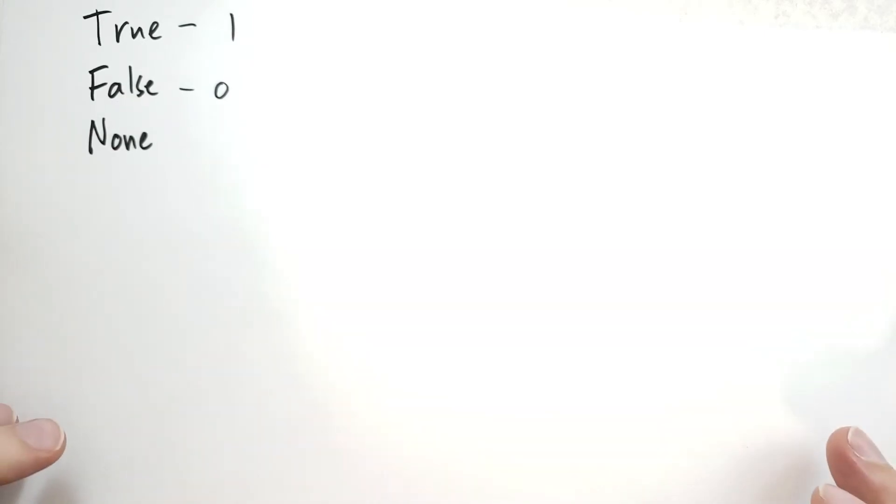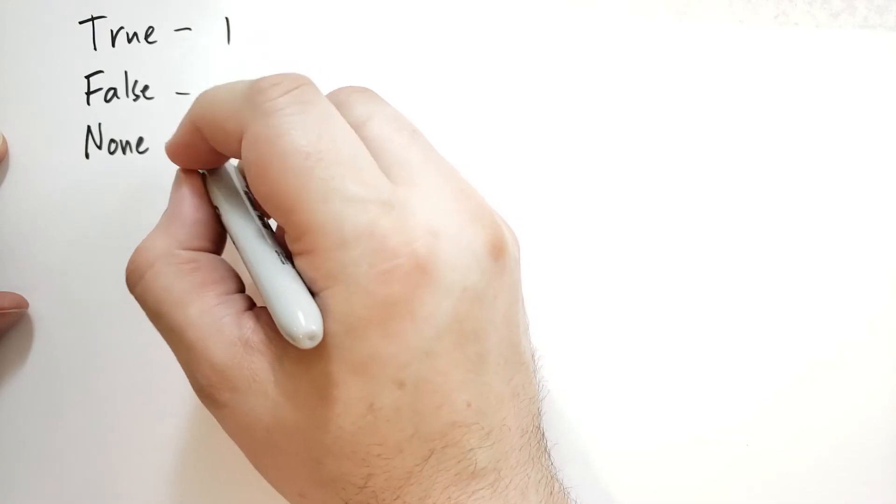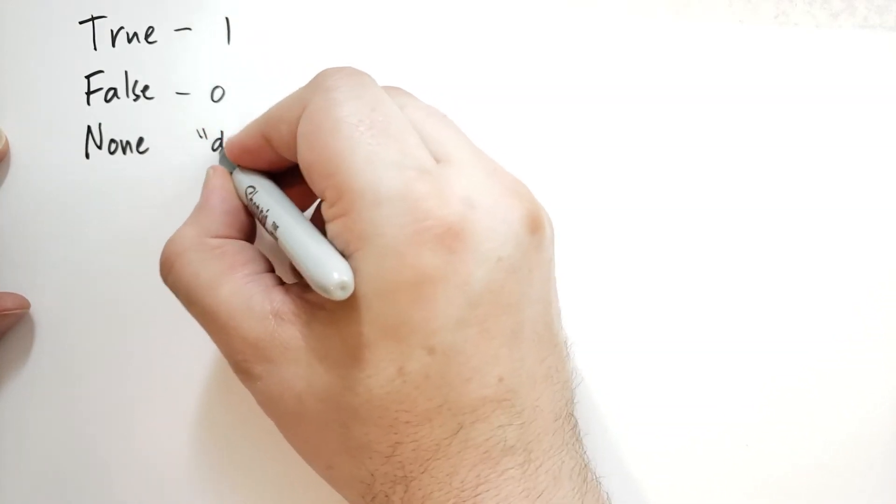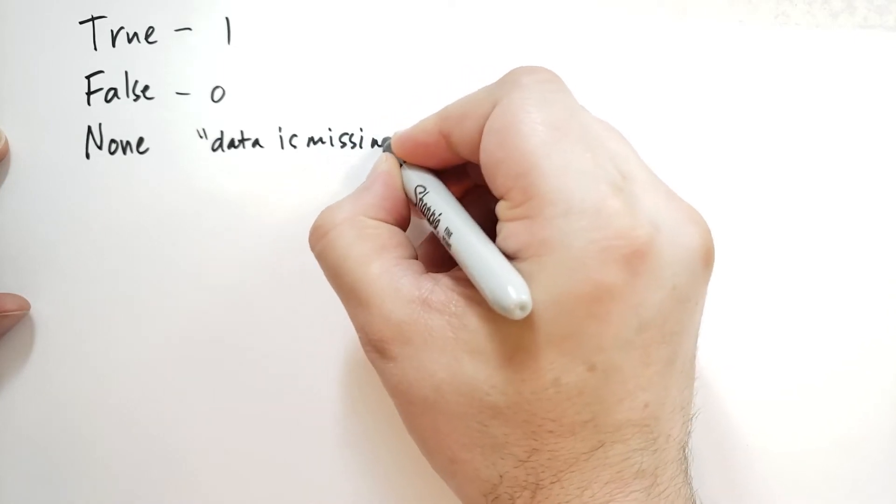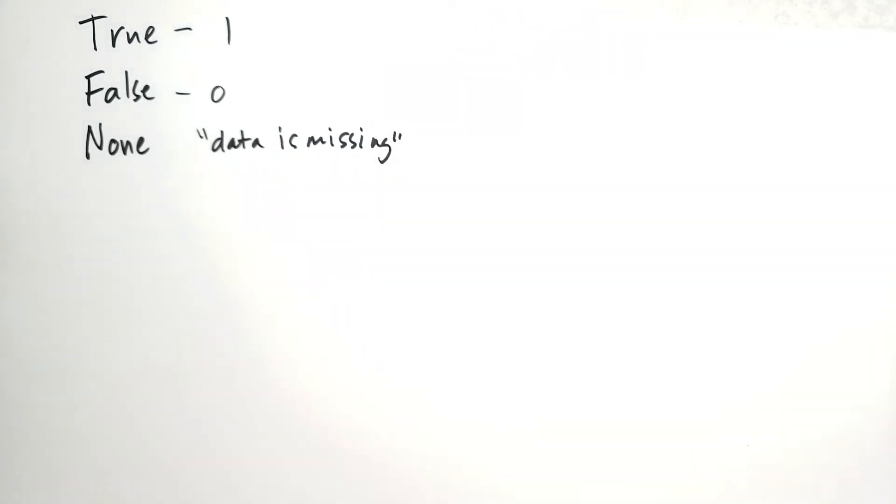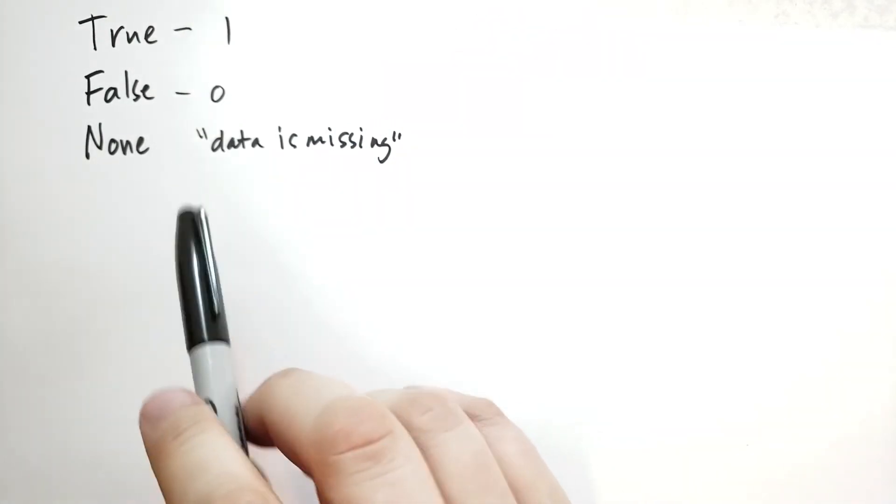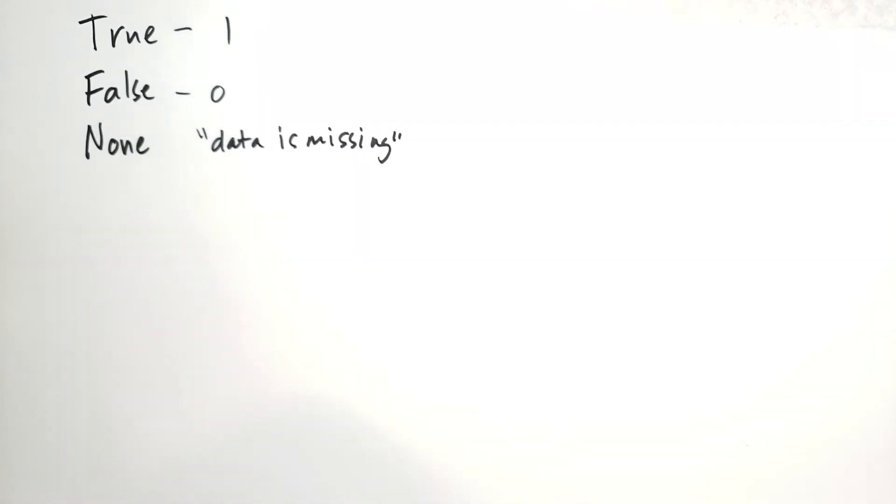You can go ahead and try True times 2. And None is kind of like a data is missing field. For instance, if you had a form, and you're asking for somebody's name, when you first hand them that form, the name is None, because they haven't filled it in yet. Once they fill it in, then it's no longer None, it's some other value.